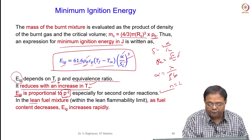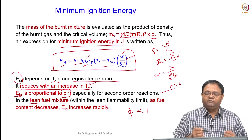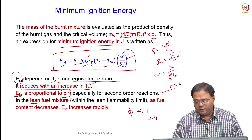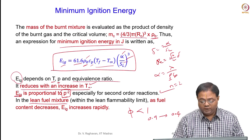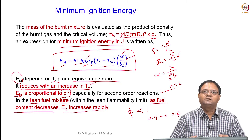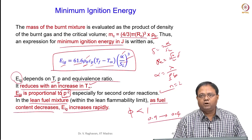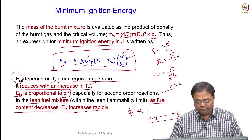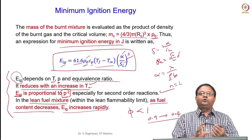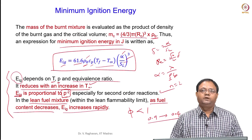For a lean fuel mixture (φ < 1), as the equivalence ratio decreases from say 0.9 to 0.4, the fuel content decreases and heat generation is reduced. Therefore, more energy is required to ignite the mixture — you need more ignition energy for a given T∞, or you must increase T∞. To achieve piloted ignition, you need a minimum volume of premixed reactants and a minimum ignition energy.